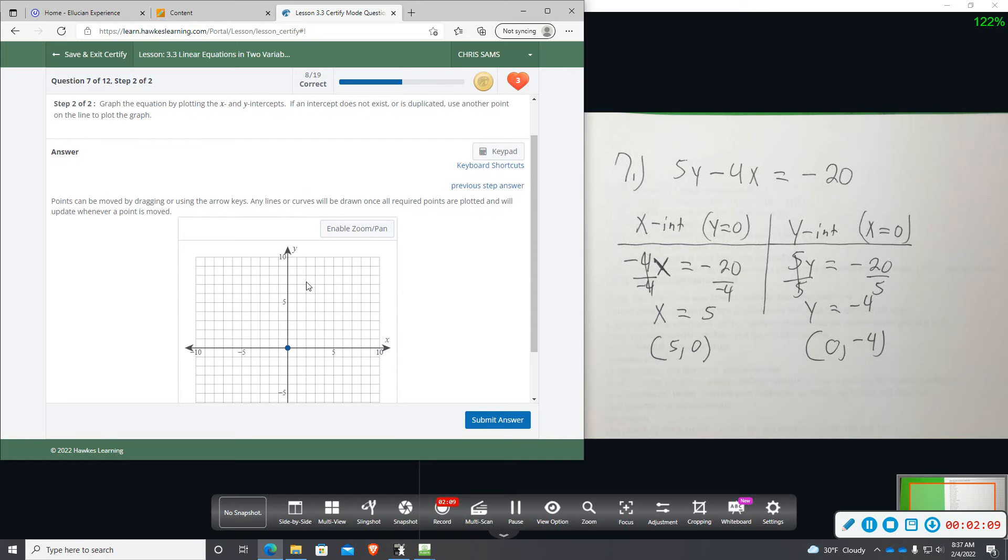Alright, then part 2, we're just going to drag these points to those ordered pairs. So we're going to go 5 to the right and stay on the x-axis. And then we're going to stay on the y-axis and go down 4.